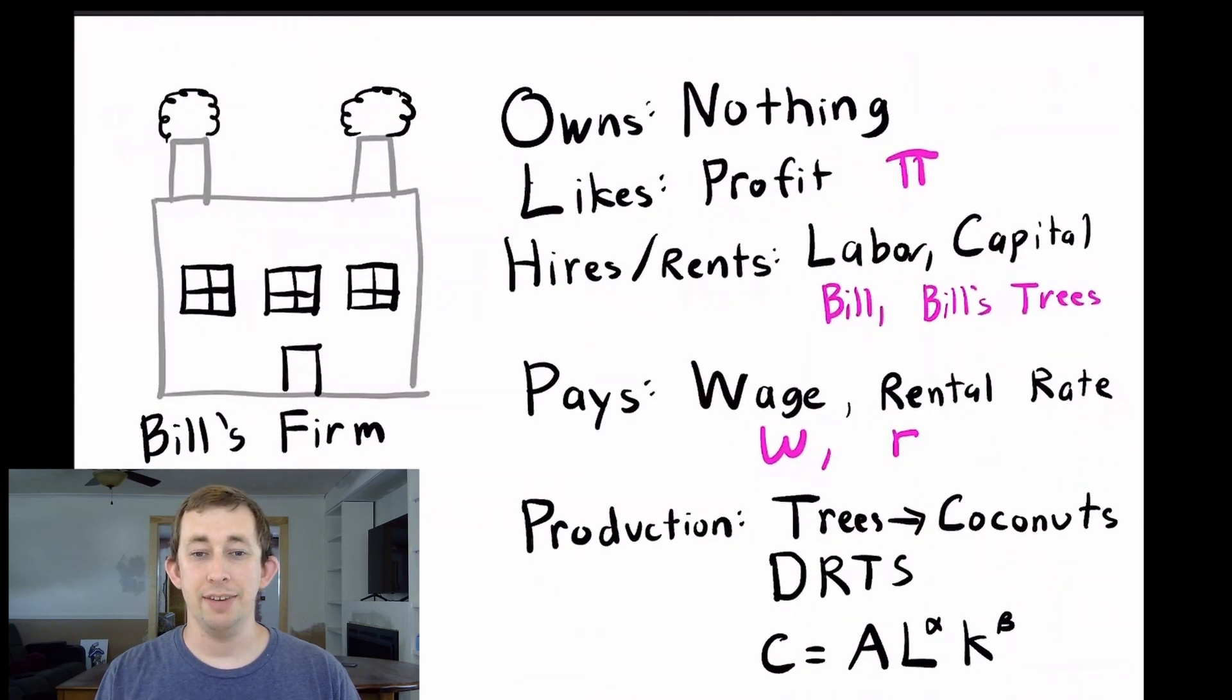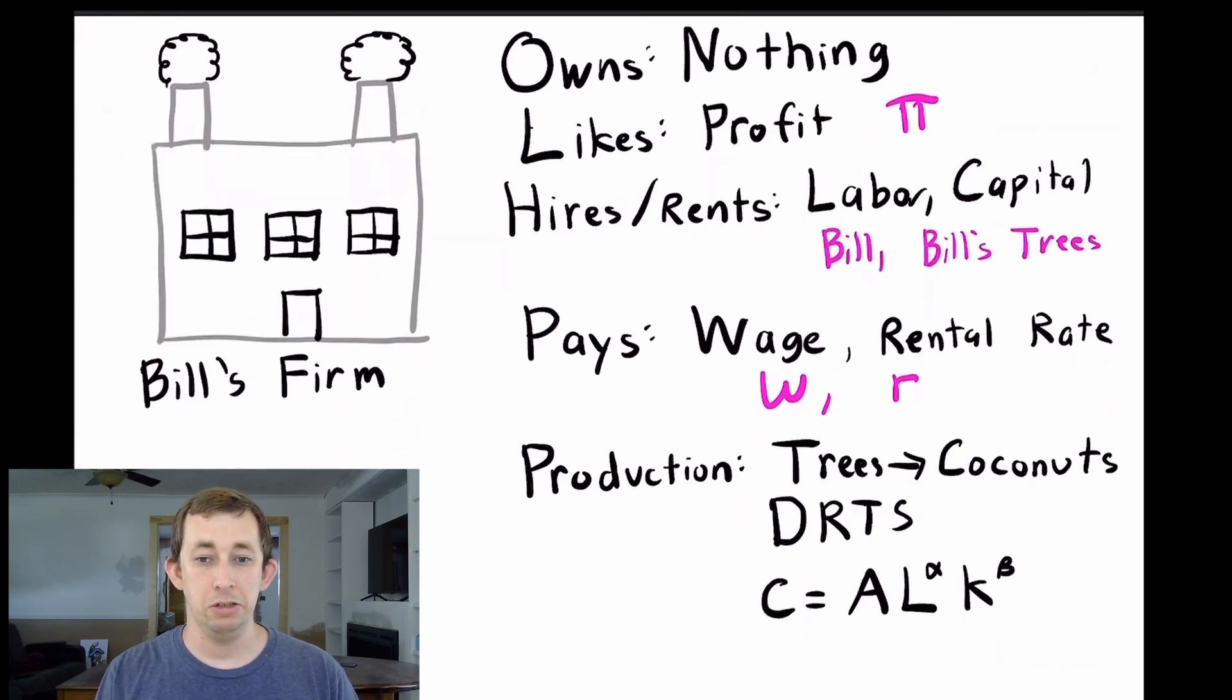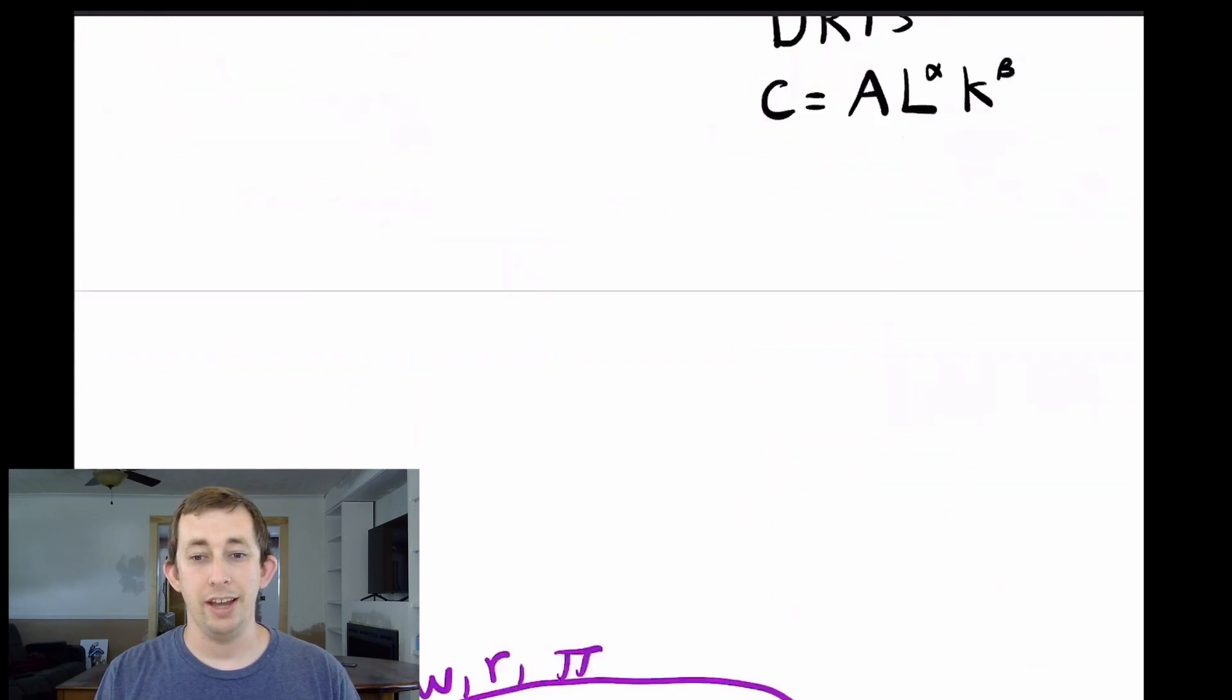Bill's firm doesn't own anything. If it wants to produce coconuts, it needs to rent coconut trees and hire labor. It only cares about profit from producing and selling coconuts. It pays its workers and capital a wage and rental rate. The production function for this firm is decreasing returns to scale. For example, it might be a Cobb-Douglas production function where the number of coconuts equals some parameter a times l to the alpha k to the beta, where alpha plus beta is less than one.